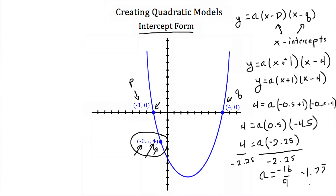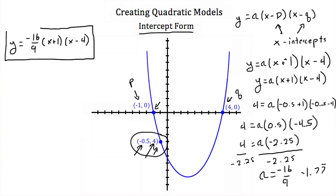So if we plug that back in, we're going to get y is equal to negative 16 ninths times x plus 1 times x minus 4. And this is the equation for our parabola in intercept form.